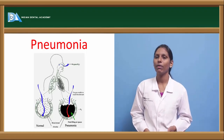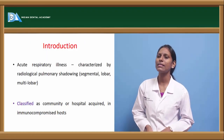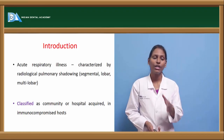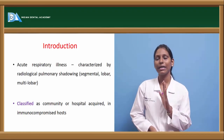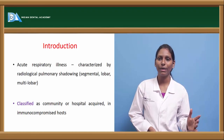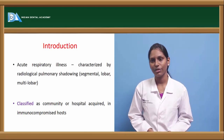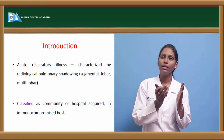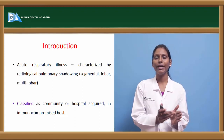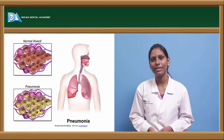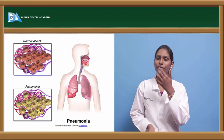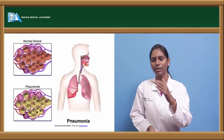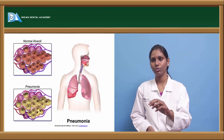Pneumonia is an acute respiratory illness characterized by radiological pulmonary shadowing which is either segmental, lobar, or multi-lobar based on the region involved. Normally it is classified into community or hospital acquired pneumonia and pneumonia in immunocompromised patients. Here is a picture which is actually showing normal alveoli and pneumonia alveoli which are affected with pneumonia.